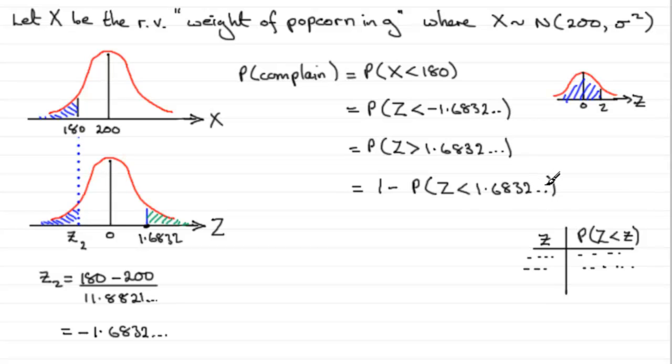And depending on your tables, you've got to take a value as close as you can to that. The tables I was looking in gave a value of just 1.68. They gave values to two decimal places. And alongside 1.68 was the value 0.9535.